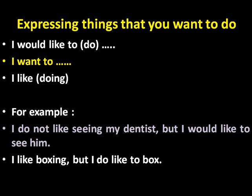After 'I would like to' and 'I want to,' there should be a base verb. After 'I like,' the following verb should be in the -ing form. For example: 'I don't like seeing my dentist, but I would like to see him.' There may seem to be a contradiction but there isn't — I'll explain the difference between 'I would like to do something' and 'I like doing something' in the following slide.